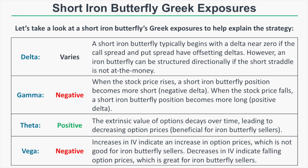An easy way to conceptualize gamma: for maximum profit, you want the stock price right at your short strike at expiration. If the stock rises above the short strike, you want it to come back down — represented by negative delta. If it falls below, you want it to rise back — represented by positive delta. In regards to theta, a short iron butterfly has positive theta because we are net short options. As time passes, extrinsic value decays, leading to decreasing option prices, which is beneficial for the iron butterfly seller.